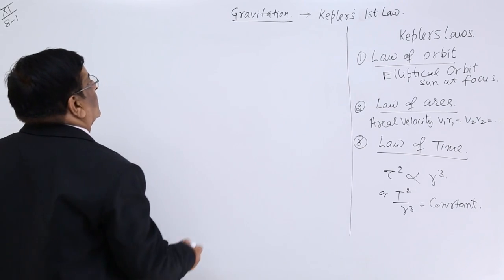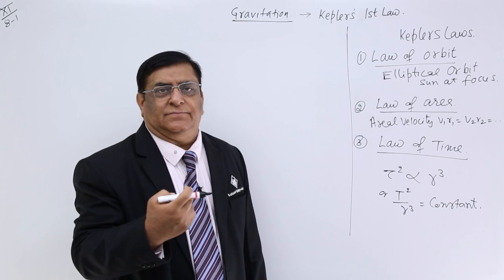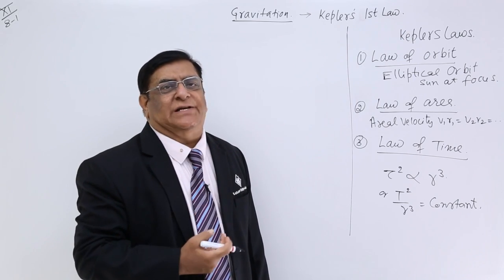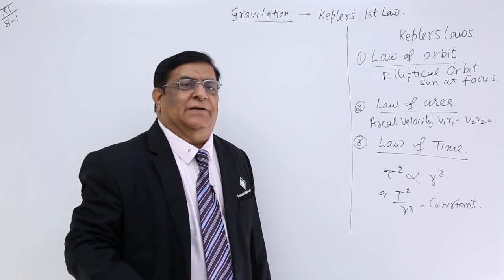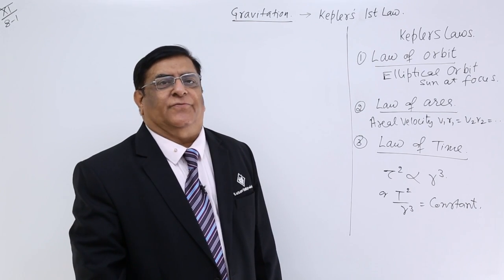Kepler's first law says that the planets move around the sun in a path which is known as an orbit, and the shape of that orbit is not a circle, it is the shape of an ellipse.